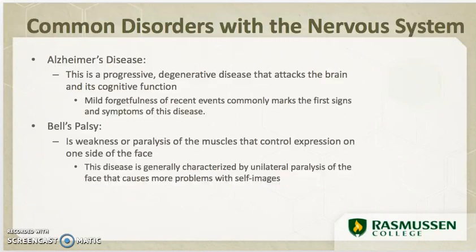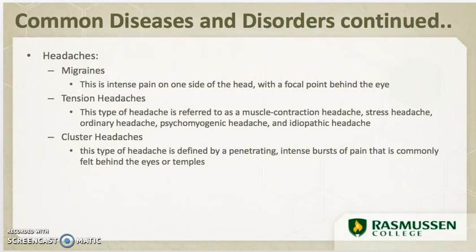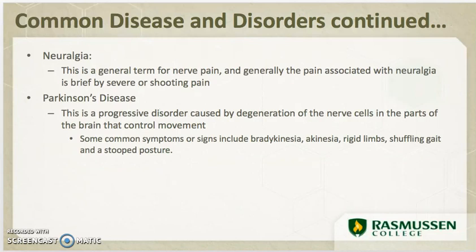Geriatric patients can have common neurological disorders such as Alzheimer's or Bell's Palsy. Headaches are actually the number one thing neurologists deal with, and no one headache is the same. You'll also deal with patients who have neuralgia — a term for nerve pain when the cause cannot be determined — or Parkinson's. Dementia is also part of the neurological system, often discussed alongside Alzheimer's.